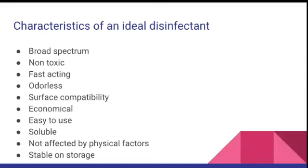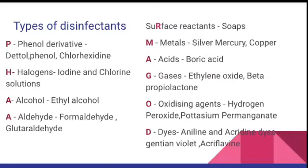What are the types of disinfectants? To remember the types, I have a mnemonic called PHARMA GOD. P represents phenol derivatives — the examples are Dettol, phenol, and chlorhexidine; even Savlon comes under phenol derivatives. Lysol and Savlon all come under phenol derivatives. H represents halogens — the common halogens used in hospitals are iodine and chlorine.